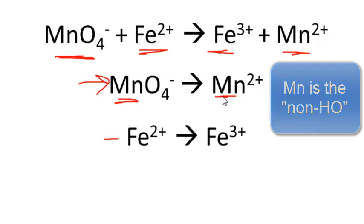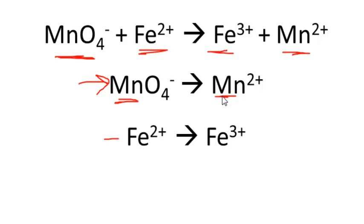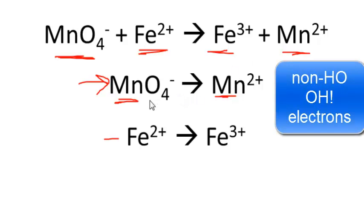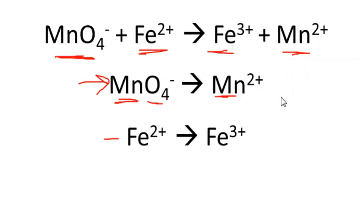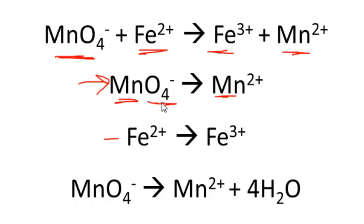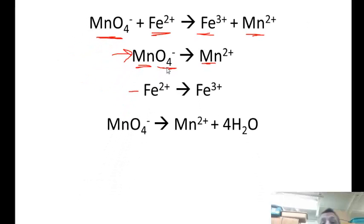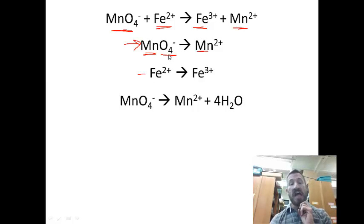Next we balance oxygen. There are four oxygens on the reactant side but none on the product side, so we add four water molecules to the product side. Now the reaction reads: MnO₄⁻ → Mn²⁺ + 4H₂O. We do oxygen before hydrogen because adding water introduces hydrogens that we'll then need to balance.